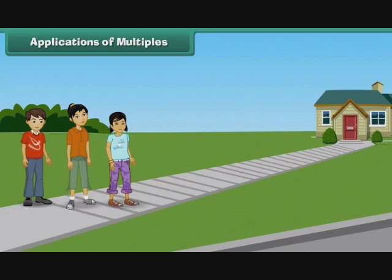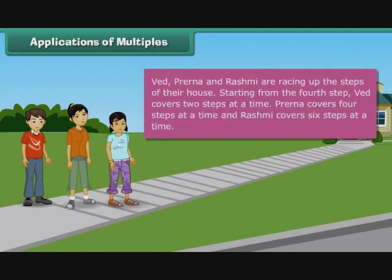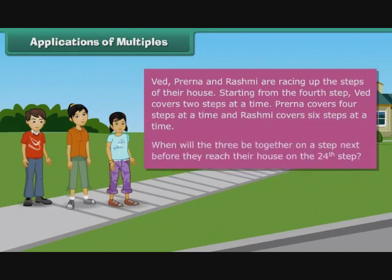Applications of Multiples: Let us now apply the concept of multiples to some word problems. Ved, Prerina and Rashmi are racing up the steps of their house. Starting from the 4th step, Ved covers 2 steps at a time, Prerina covers 4 steps at a time, and Rashmi covers 6 steps at a time. When will the three be together on a step next before they reach their house on the 24th step?